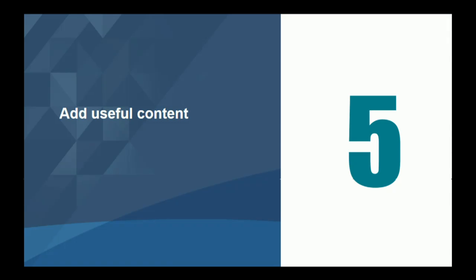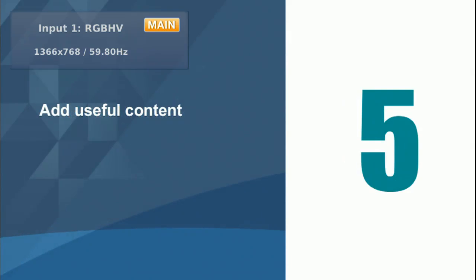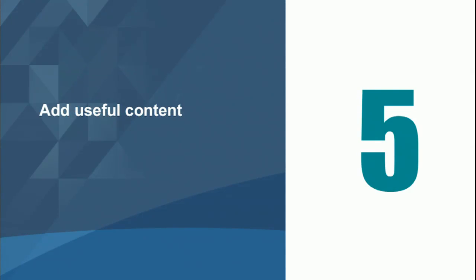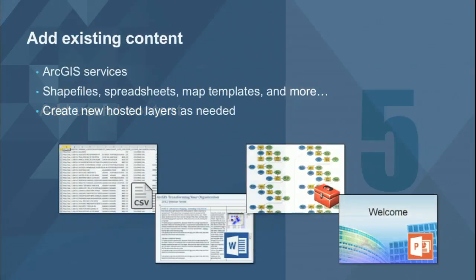So now we've gotten through the first four steps: establishing a vision and governance, knowing what success looks like, getting people engaged, creating a nice-looking home page, establishing a nice-looking brand, and organizing the organization in groups that match the governance — the stakeholders and consumers of the content. Now we're getting into what most people actually considered the first step before this session: adding useful content. And it's really tempting to just jump right into the organization and start adding stuff.